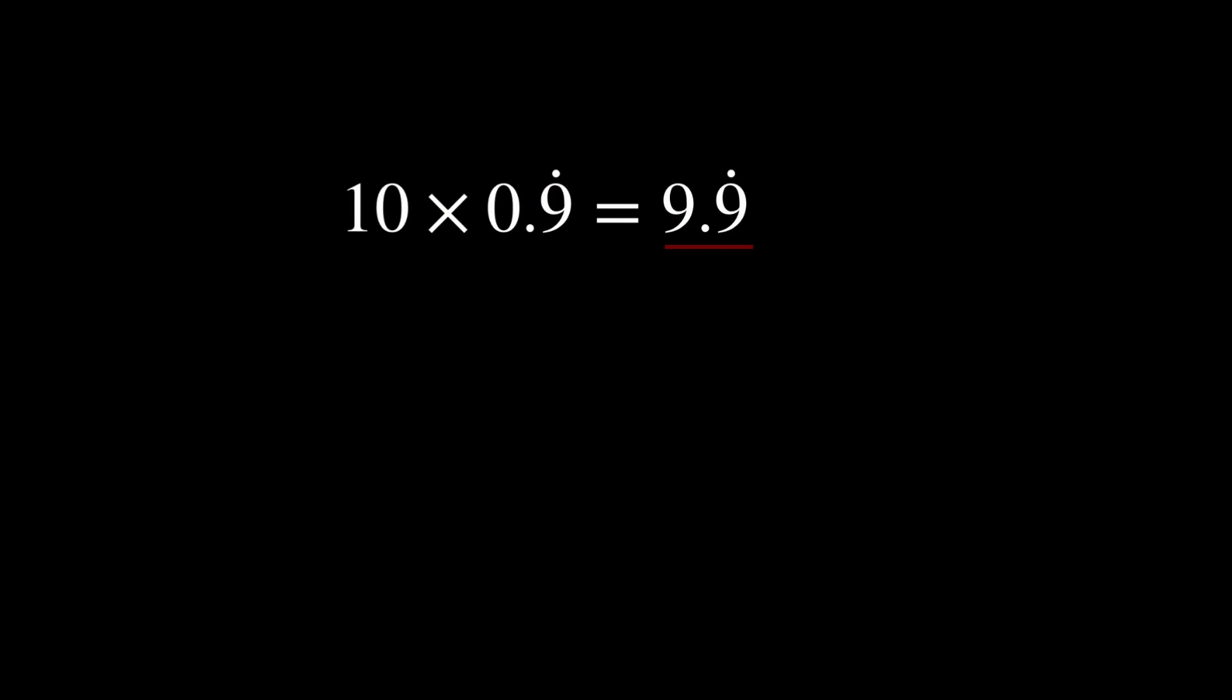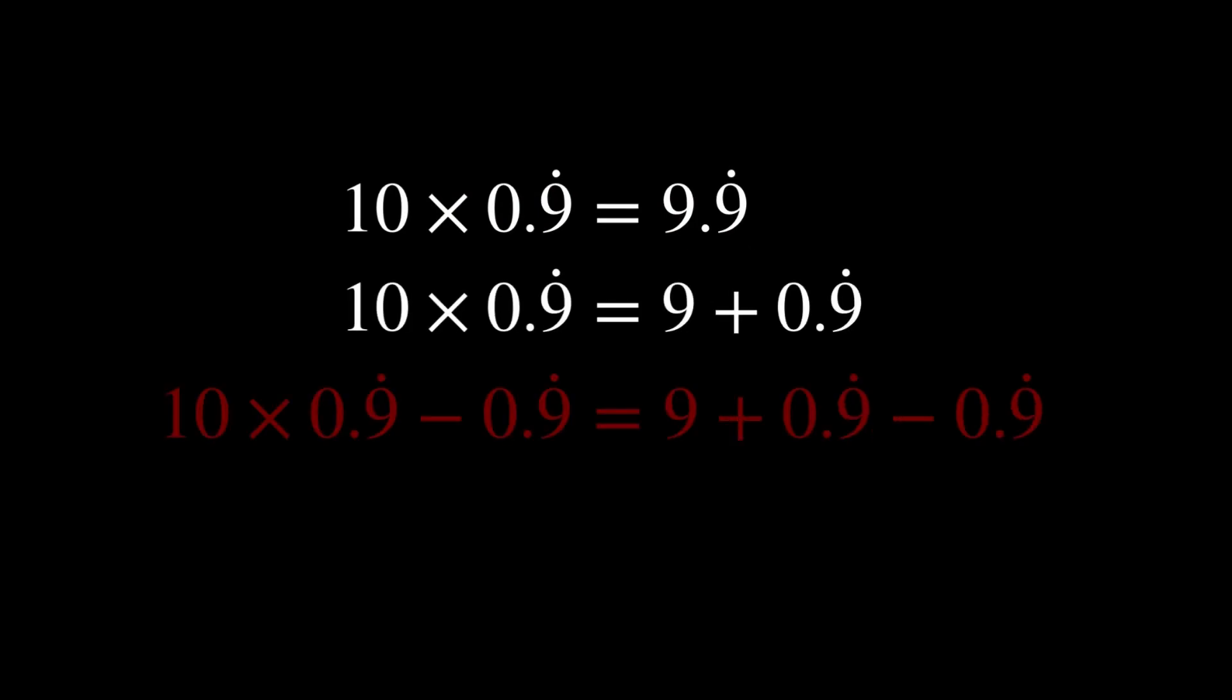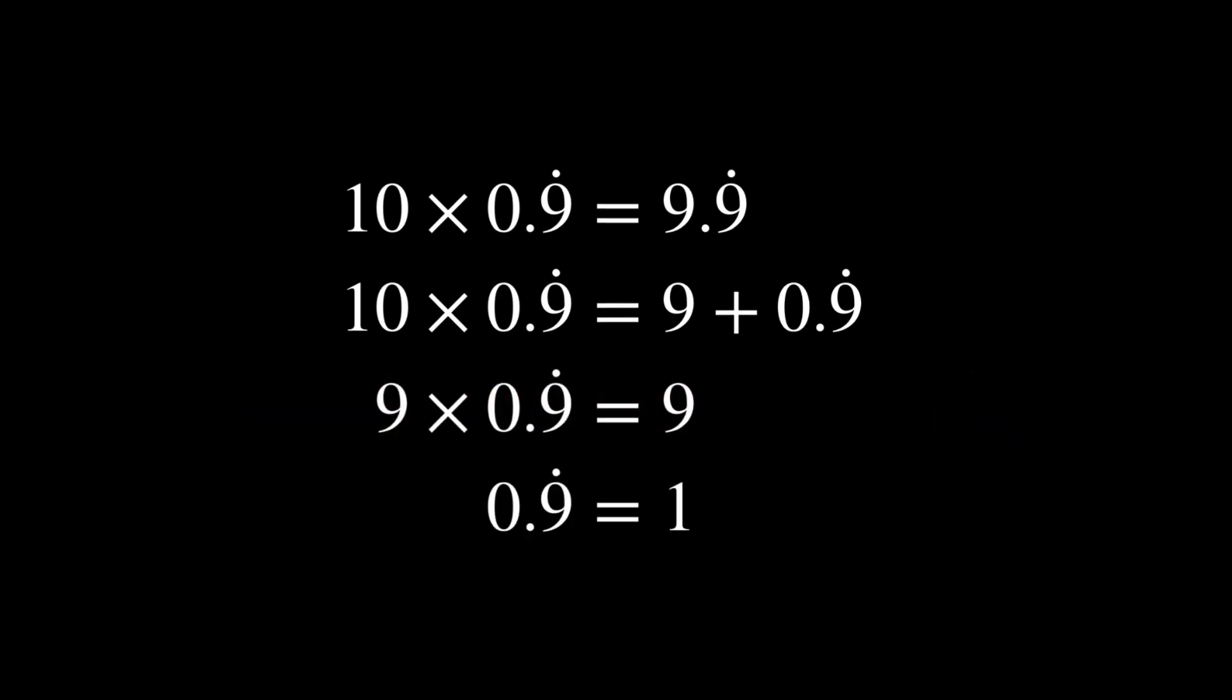Then, split the right-hand side into integer and fractional parts. Next, subtract 0.9 repeating from both sides. Finally, dividing both sides by 9 yields the desired equality.